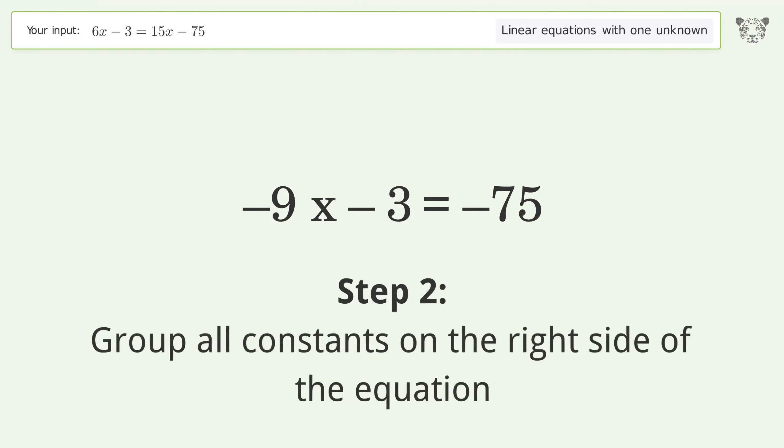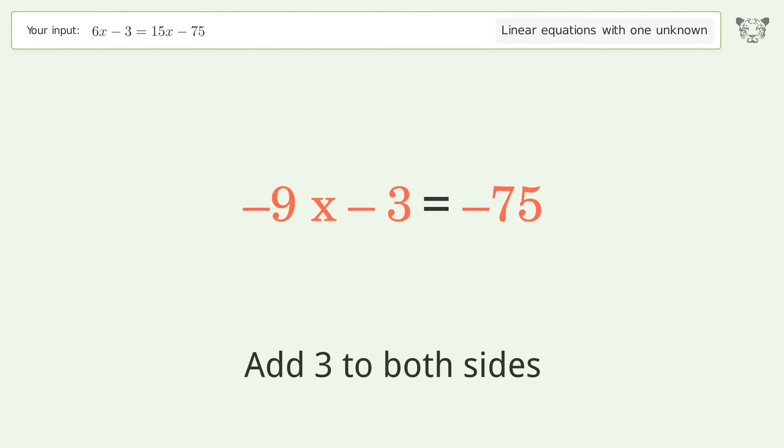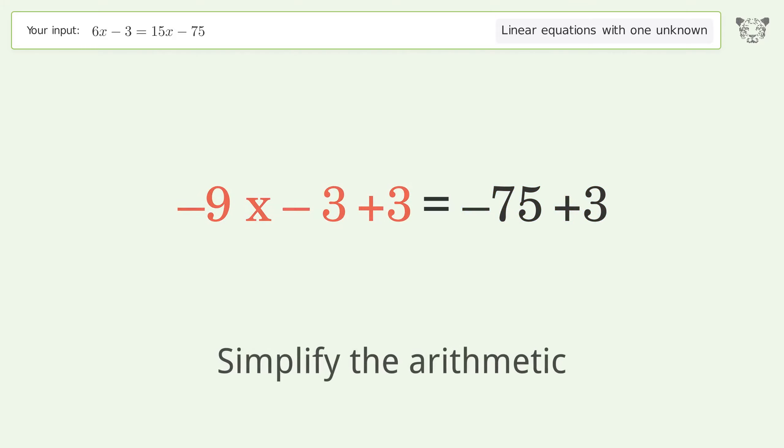Group all constants on the right side of the equation. Add 3 to both sides. Simplify the arithmetic.